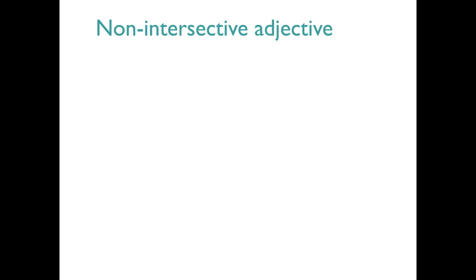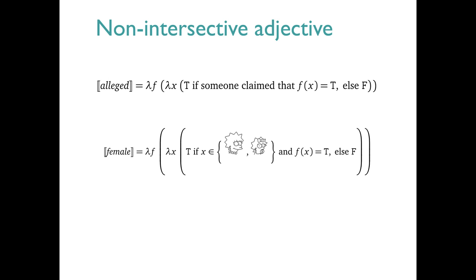For non-intersective adjectives, the semantic type is the same as for the intersective ones. So a function comes in, and then an entity, and finally we return a truth value. But the determination of truth is different. For instance, whereas female asserts that the noun meaning is true of the entity X, alleged doesn't do that. It just says someone claimed that the noun meaning was true of the entity X.